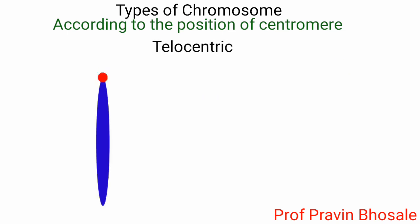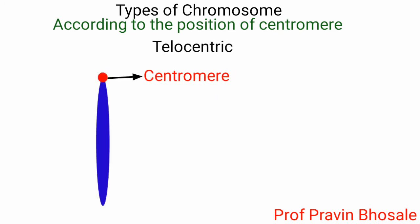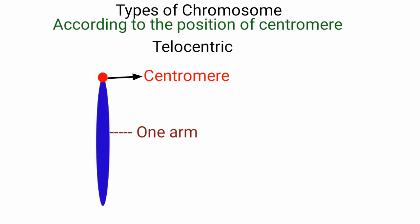Telocentric: if the centromere is situated at the tip of the chromosome, it shows only one arm and appears rod-shaped.